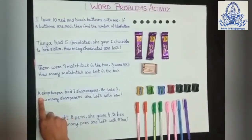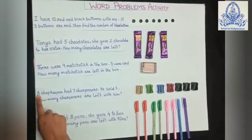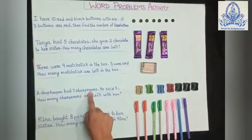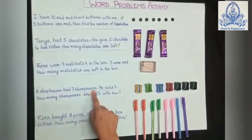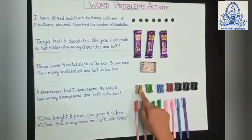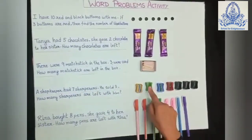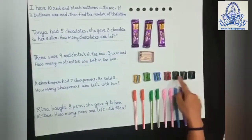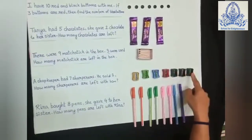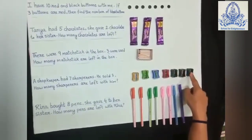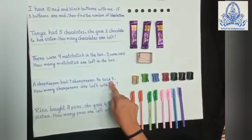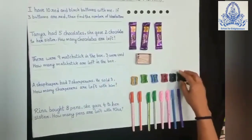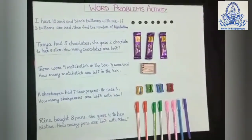Next, number 4. A shopkeeper had 7 sharpeners — 1, 2, 3, 4, 5, 6, 7. He sold 3, so I will take out 3 sharpeners.